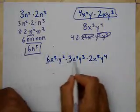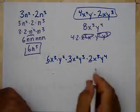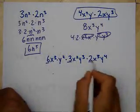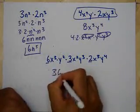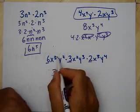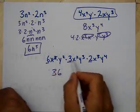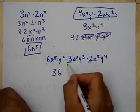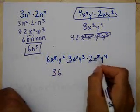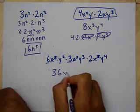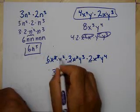I can multiply in any order. So I'm going to do 6 times 3 times 2, which is 18 times 2, and I get 36. x cubed times x squared is x to the 5th. Adding more: 6, 7, 8 — x to the 8th.